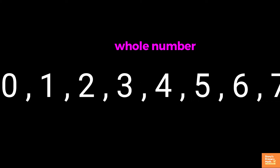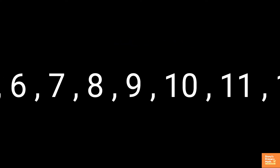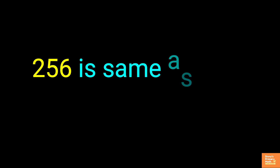In any whole number there are no parts less than 1. Hence there is no need for a decimal point to show the separation. We can imagine a decimal point at the end of the number. For example, 256 is the same as 256.0.